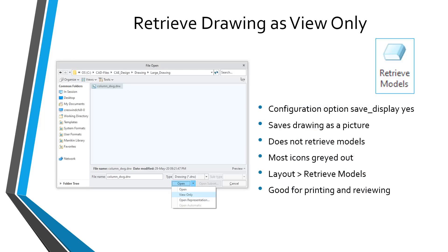Another method: if you are just pulling up a drawing to view it or to print it out, you can retrieve the drawing as view only. In order to use this method, you have to have a configuration option, Save Display, set to Yes. Essentially, whenever you save the drawing, it's going to save pictures of each sheet in the drawing and that's what it pulls up. When you retrieve the drawing as view only, it doesn't retrieve any of the different models. As a result, almost all the icons in drawing mode are going to be grayed out. If you actually want to work on the drawing, you're going to have to go to the Layout tab and choose Retrieve Models.